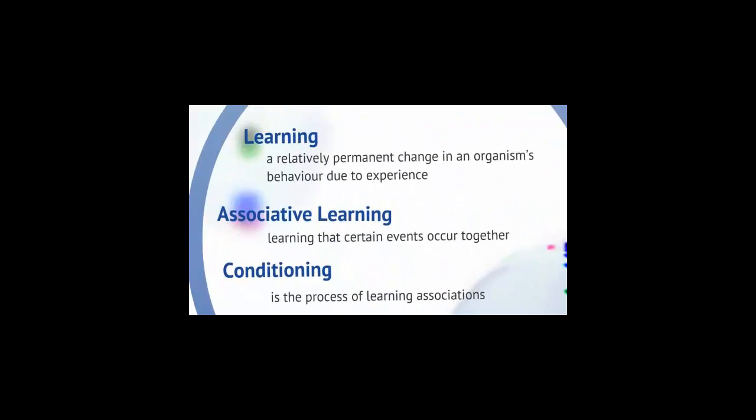Learning could be considered a relatively permanent change in an organism's behavior due to experience. So by definition, experience is key to learning. We learn by association, and our minds naturally connect events that occur in sequence. Simpler animals can learn simple associations, such as training dogs.